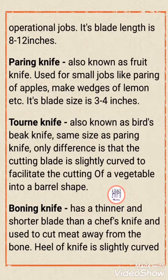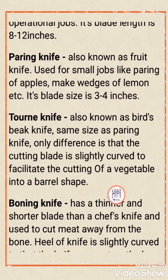Similar to the paring knife, but the difference is that its cutting blade is slightly curved so that your vegetables can be given a barrel shape, which gives the blade a curved profile.